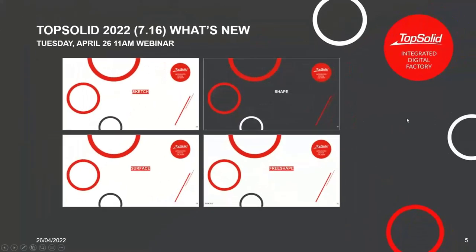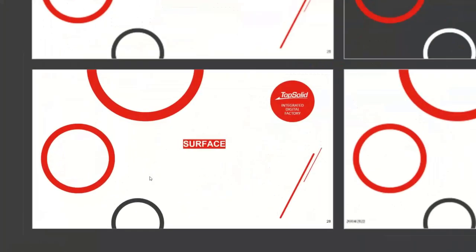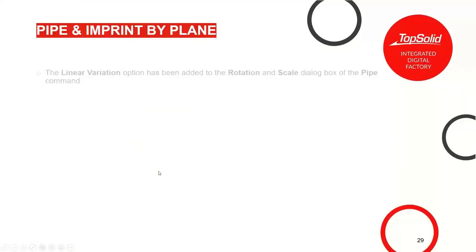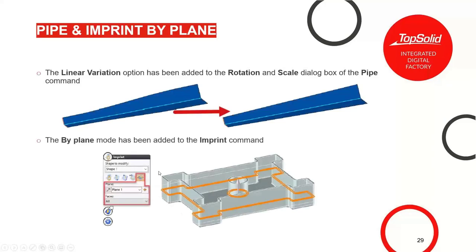Let's look at surfaces. We did a couple of neat things in surfacing this year. In the pipe command, we've added linear variation as an option to control rotation with scale. In the imprint command, there is a new imprint by plane. Let's have a look at both.